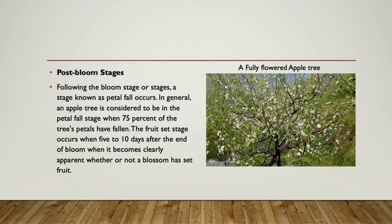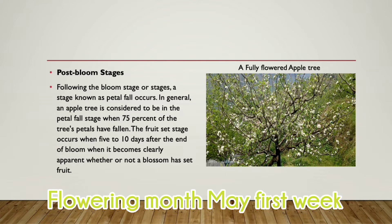After bloom, you can see this picture from my farm — the plant has completely come up with flowers and leaves. This is the hundred percent bloom stage, covering all over the tree. In the post-bloom stage, almost all the flowers have fallen to the ground. This process goes on for about five to ten days, after which it is time to set the fruit.